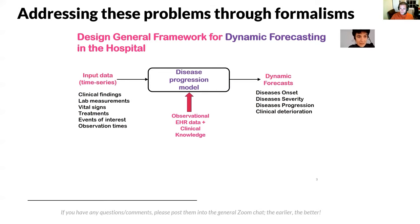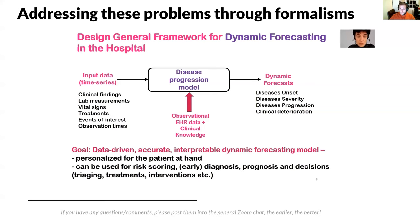A key ingredient in this formalism will be the development of a disease progression model capable of learning from observational electronic health record data as well as clinical knowledge. At decision time, we take into consideration for the patient at hand the input data available so far — a time series that may include clinical findings, lab measurements, vital signs, treatment administered so far, events of interest, and observation times. On the basis of this, we issue dynamic forecasts. These may include determining disease onset, disease severity, disease progression, and clinical deterioration. The goal is to develop a data-driven, accurate, and interpretable dynamic forecasting model that is personalized for the patient at hand and which can empower clinicians by providing risk scores, early warning systems, early diagnosis, prognosis, and assist in triaging, determining what treatment to use or what interventions to do and when.